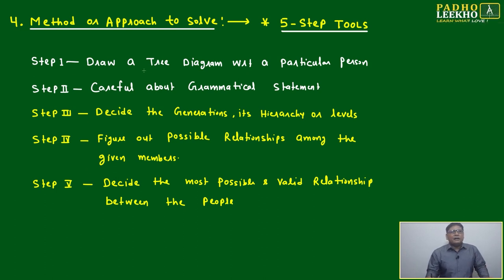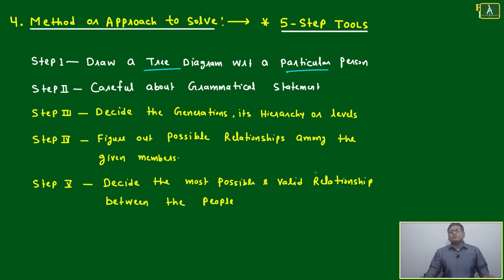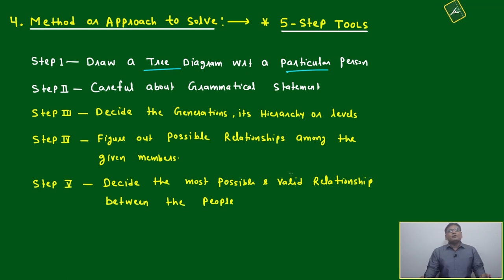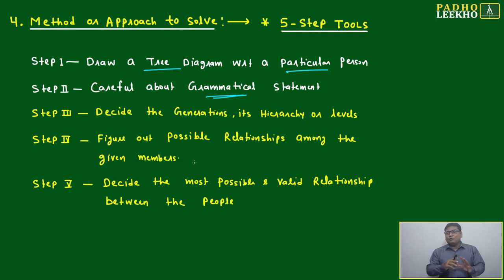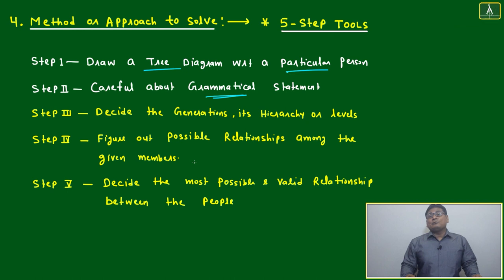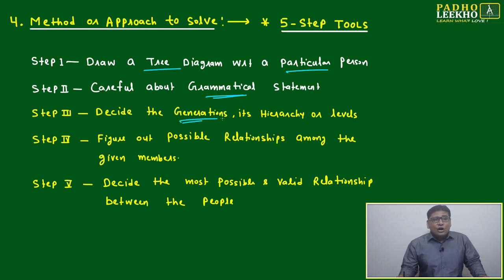Step one: draw a tree diagram with respect to the particular person with respect to which we have to find the relation. Draw the tree diagram carefully, because grammatically they will make very lengthy and confusing statements. Step three: decide the generations — how many generations are involved.